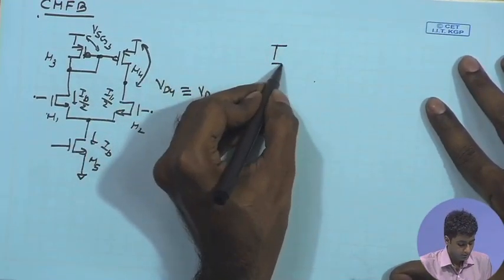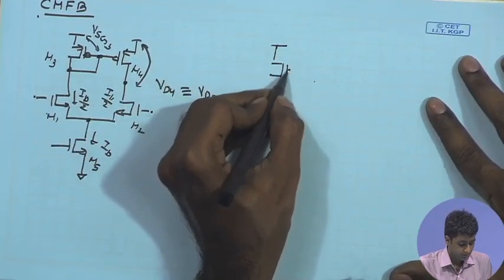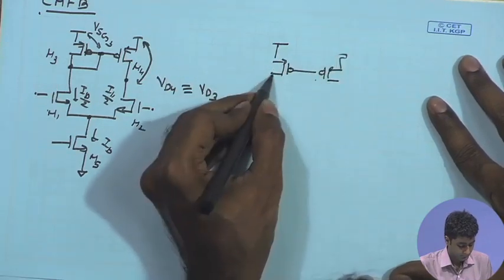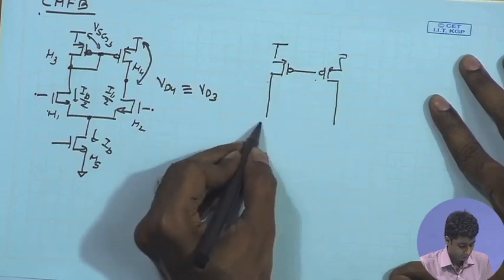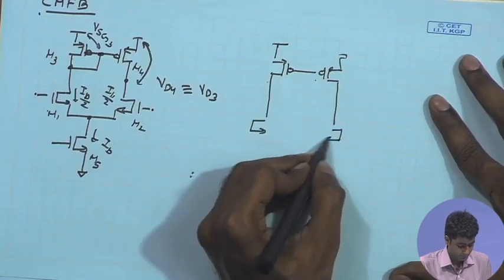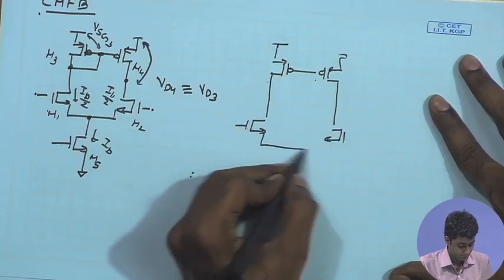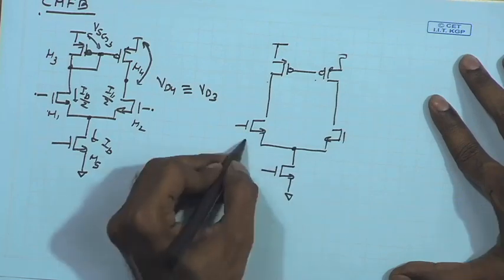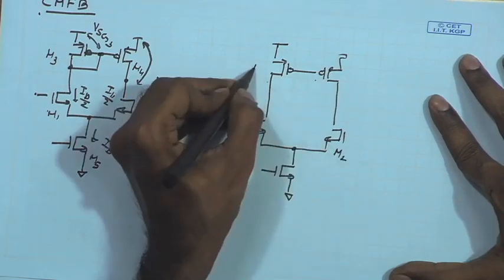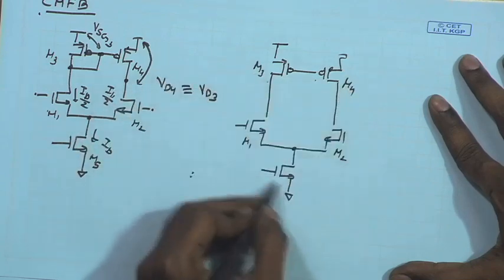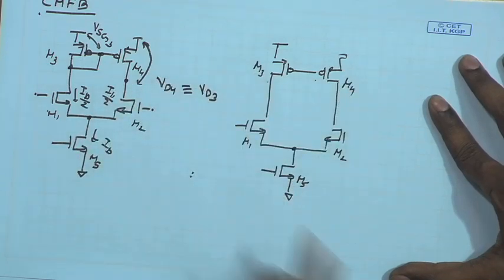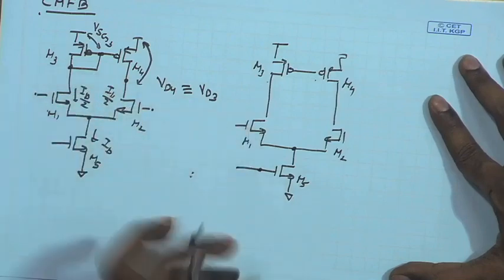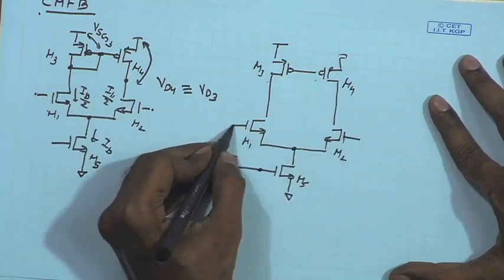Let us draw our fully differential amplifier once again: M1, M2, M3, M4, and M5. Assume that the gate of M5 is biased with the help of a current mirror — we are not drawing all that.